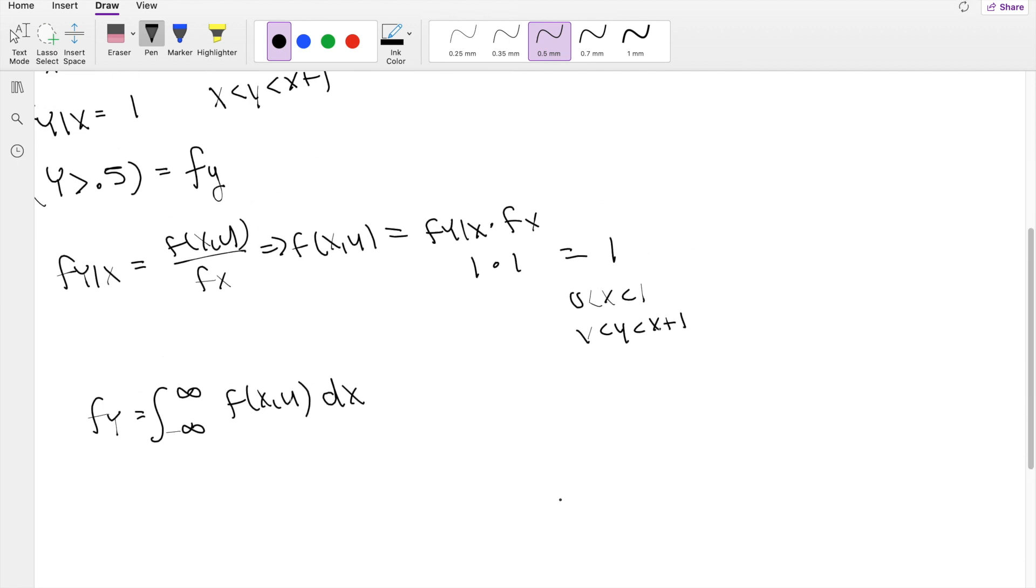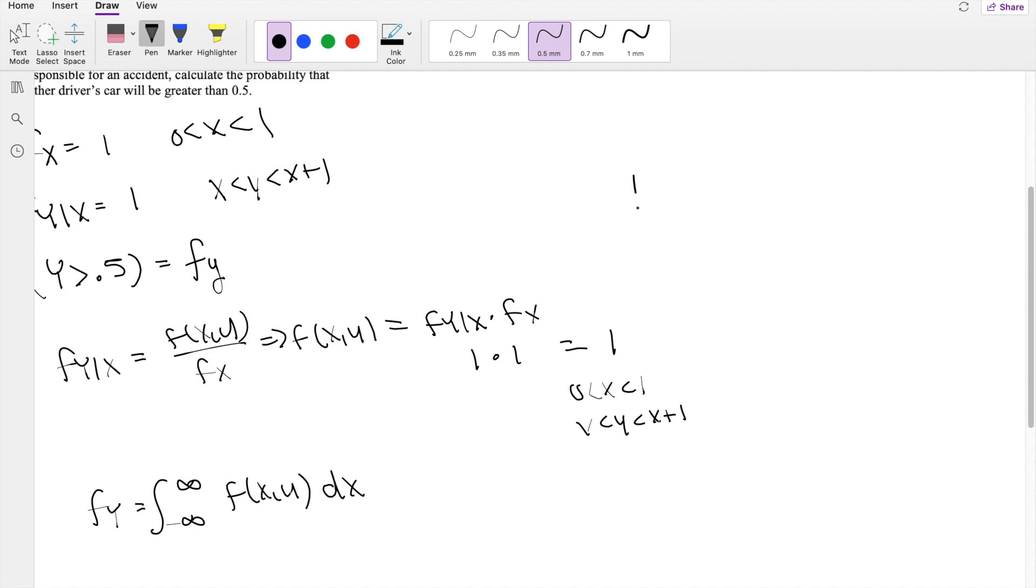Let me actually graph what the range is, so it's a little bit easier for us to see. y equals x is going to be this line. If this is 1, then y less than x plus 1 is going to be this line right here with the same slope. So this is y less than x plus 1, and this is y equals x, and it exists from 0 to 1.